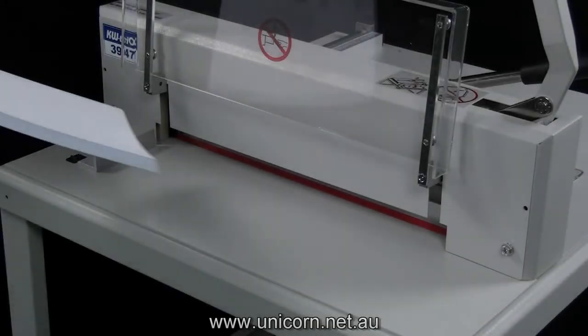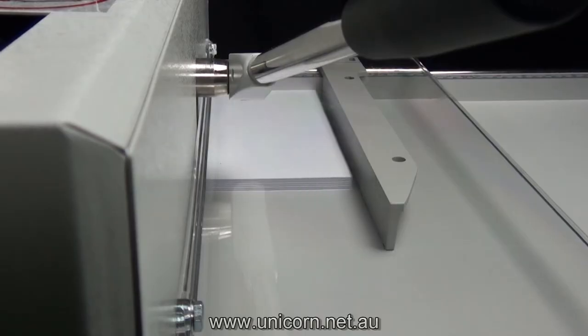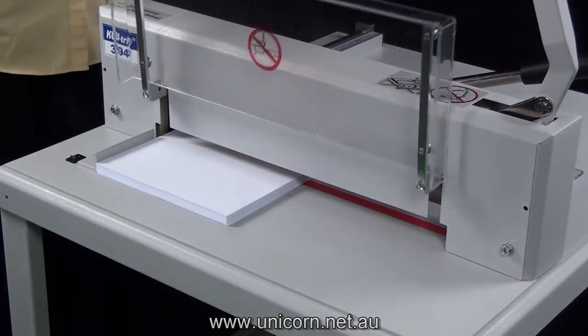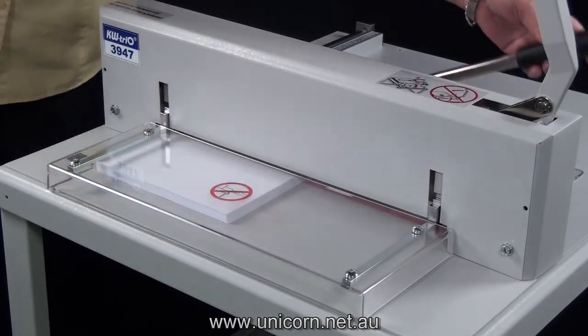Step 1. Simply put the paper on the cutting table and line it up against the back gauge. Step 2. Lower the safety cover and apply the clamp.